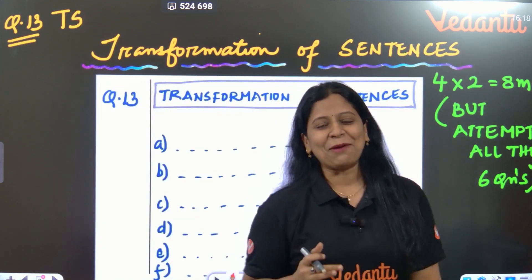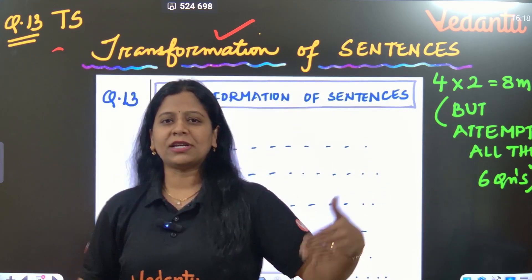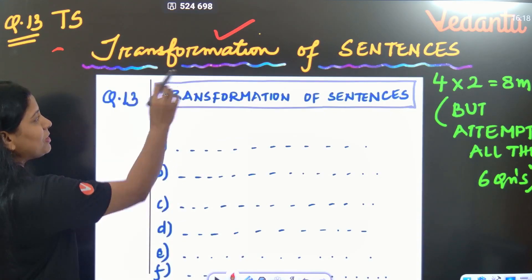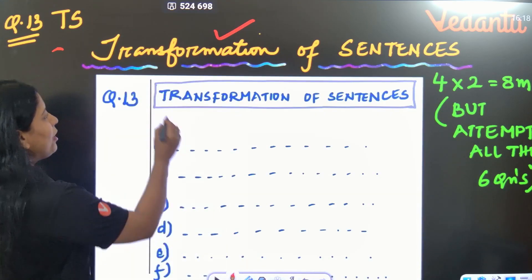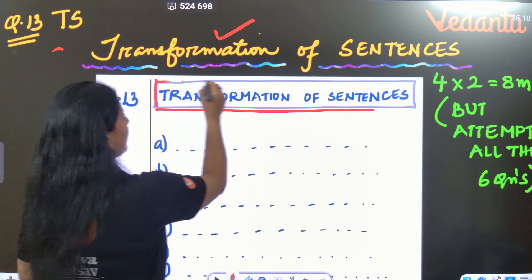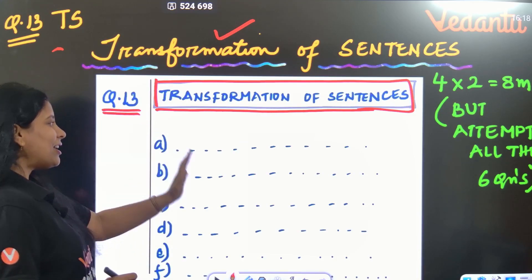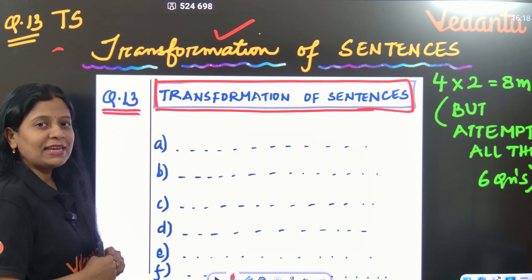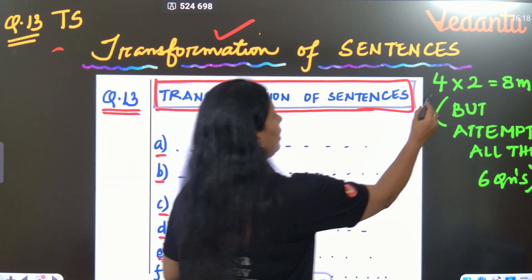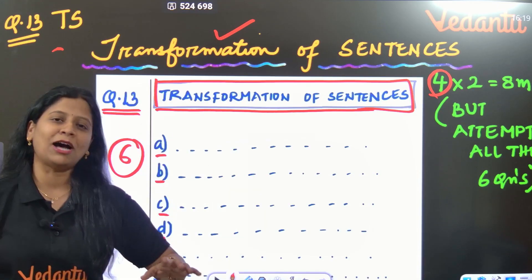Here is an example for T.S. students — transformation of sentences, question number 13. A.P. students can follow the same approach. In the answer sheet, after writing a transformation of sentences answer, highlight it in a box using a pencil. The question number should be on the left side of the margin, and sub-numbering A, B, C, D should be written on the right side. There may be six questions total; you have to write four, but my recommendation is to attempt all six. If one is wrong, you will still be on the safe side.